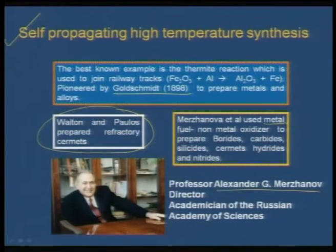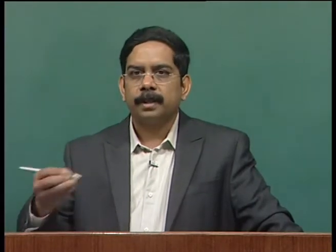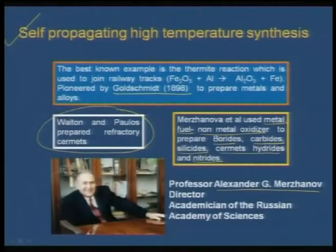Merzenov used a metal fuel and a non-metal oxidizer to prepare borates, carbides, silicates, cermet hydrates, and nitrates. To prepare nitrates you need nitrogen-producing starting materials; for borates you use elemental boron or diboron; for carbides you mix with reactive carbon powder. When you mix a metal and non-metal oxidizer as fuel and spark it, you initiate a very high temperature reaction yielding high temperature ceramics otherwise impossible to prepare at lab scale without furnaces operating at 2200°C.